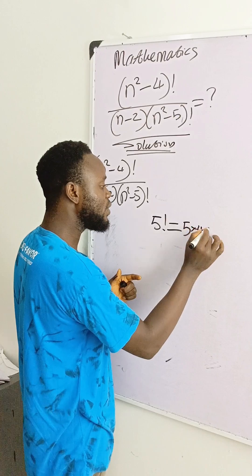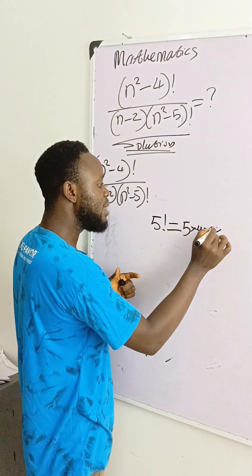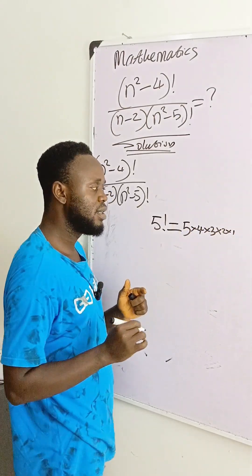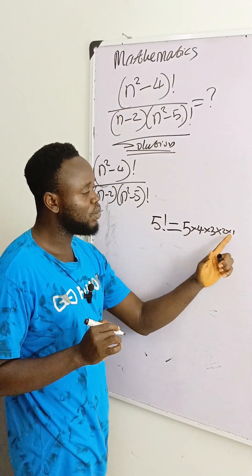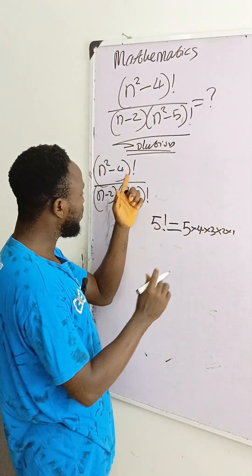Use 4 to multiply it. 4 minus 1 is 3, 3 minus 1 is 2, 2 minus 1 is 1. And 5 factorial is 5 times 4 times 3 times 2 times 1. That's the same thing we are going to do here.